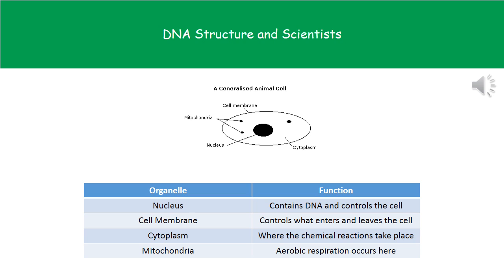We need to know what each of these organelles actually does. When answering that question, we need to use specific terms. For the nucleus, you've got to say that it controls the cell. You cannot say that it's the brain of the cell - that will get you no marks. You must say it controls the cell, and you can also say it contains DNA or genetic information.